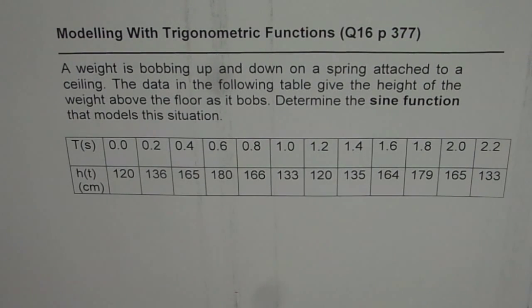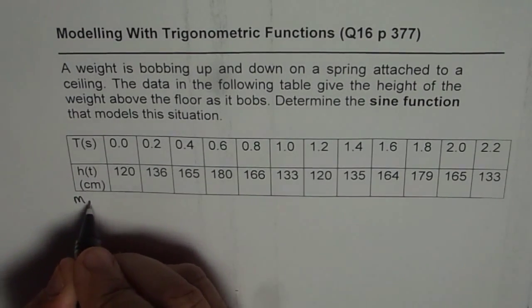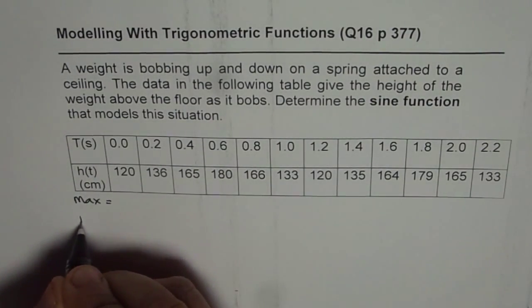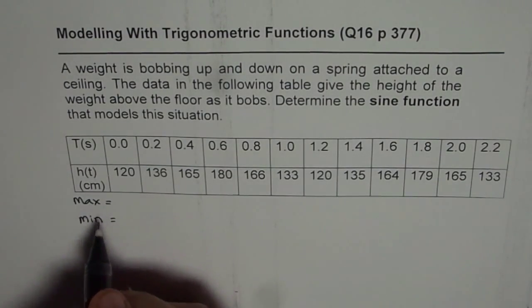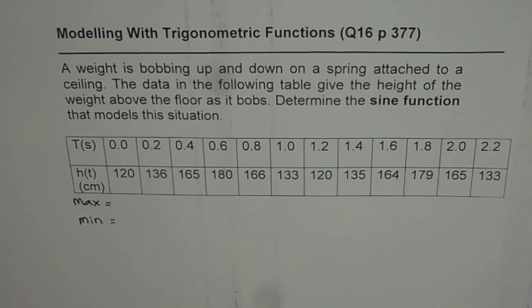So as we saw earlier, to find the sine function from the data, graph is also a data, what we need to do is we need to find the maximum value. We need to find the minimum value. Once we find maximum and minimum value, we can actually find axis and amplitude.